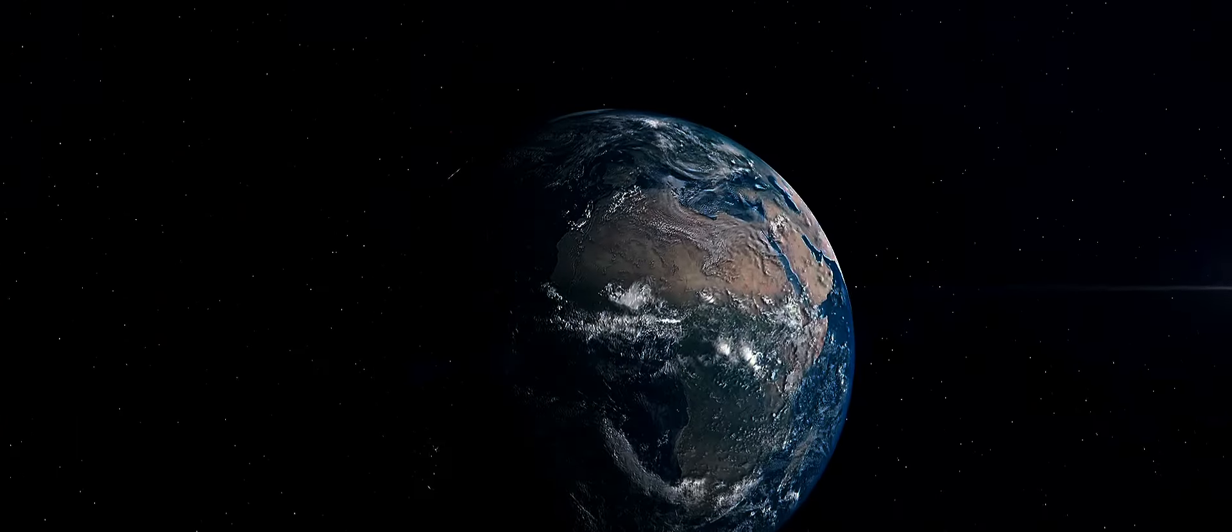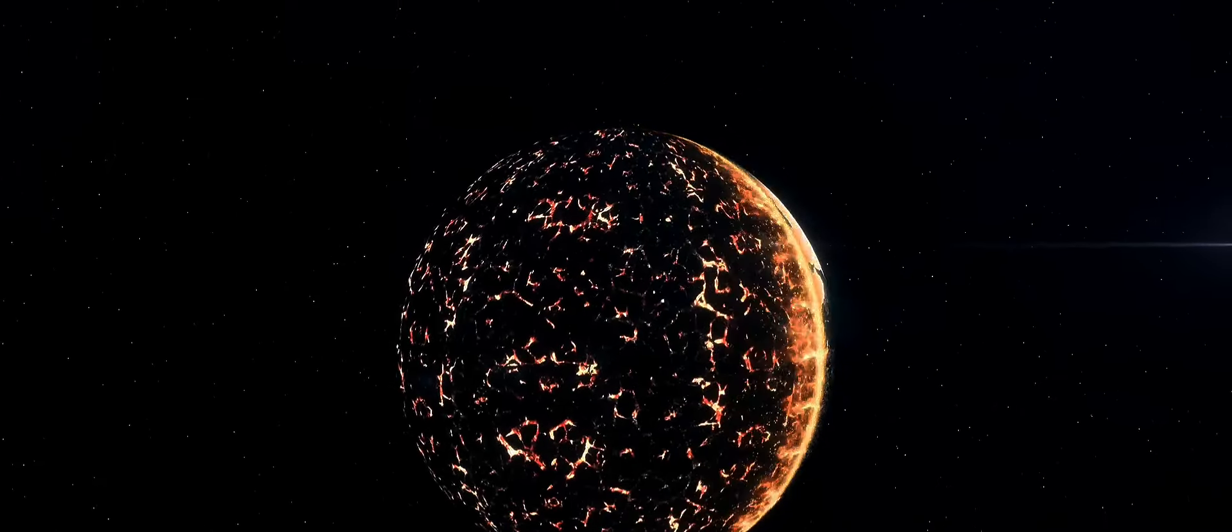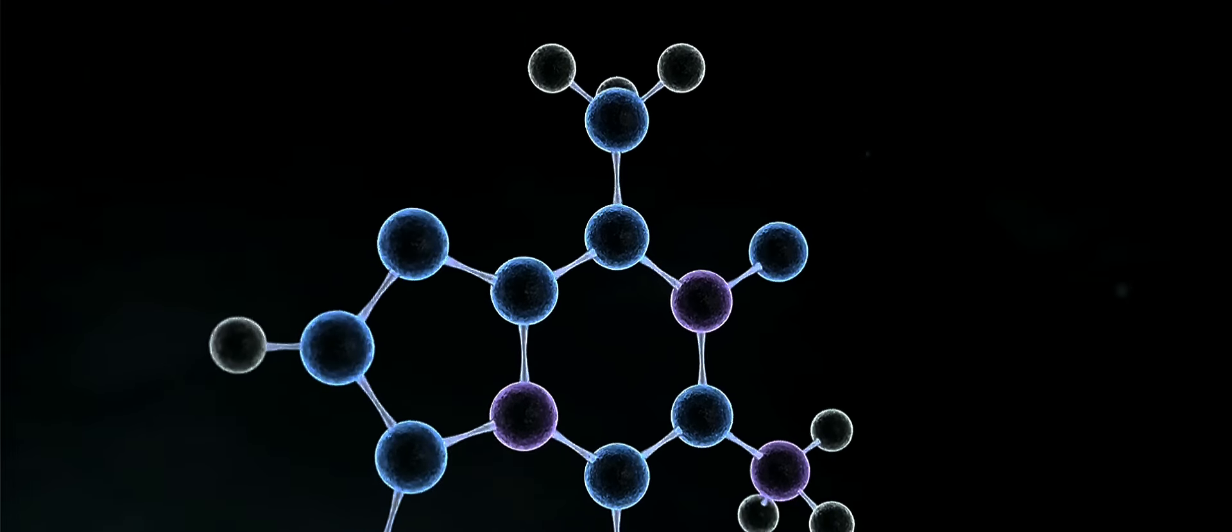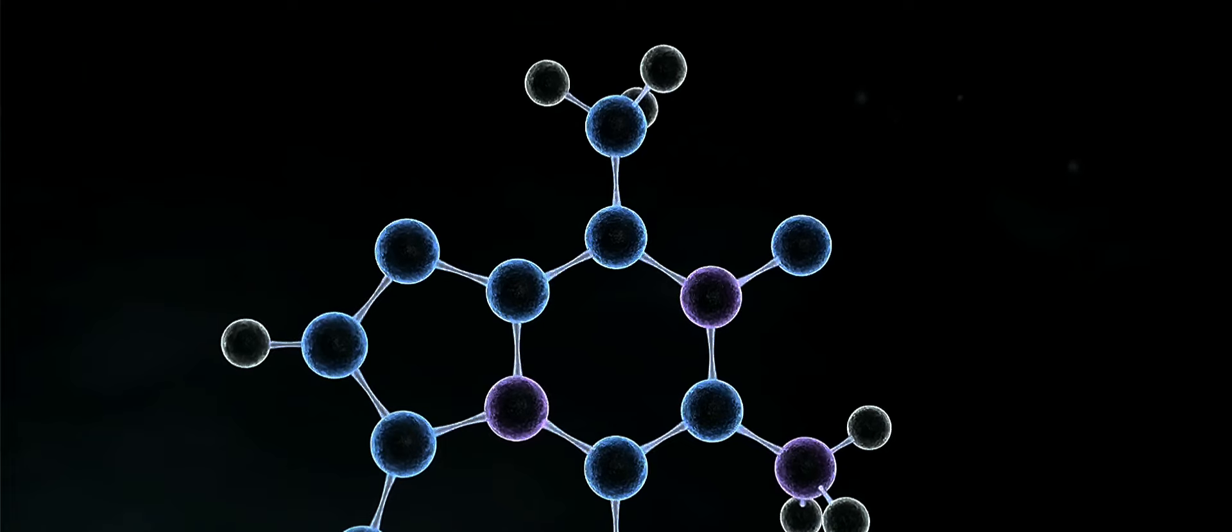Exposed to energy sources such as sunlight, heat from volcanic activity, and lightning, these gases reacted to form amino acids, the building blocks of life. Over time, these amino acids assembled into proteins, which then organized into the first cells. This was the beginning of life on Earth, a process known as abiogenesis.